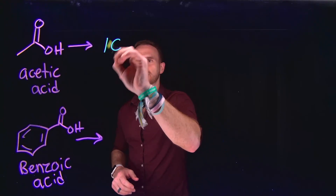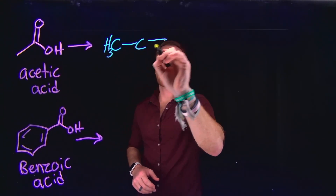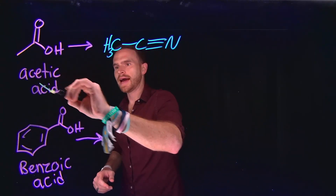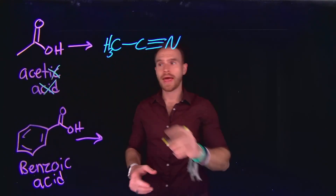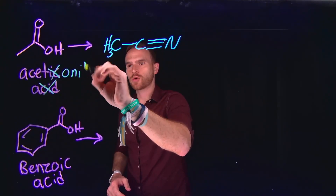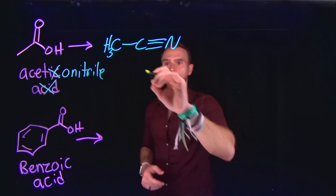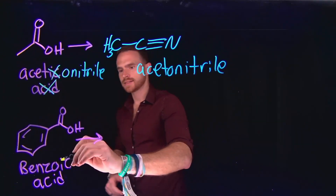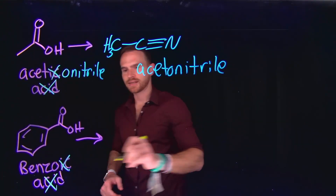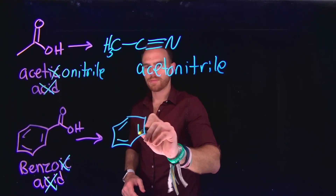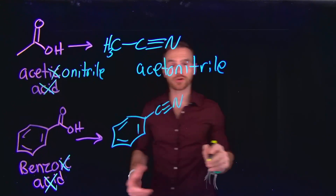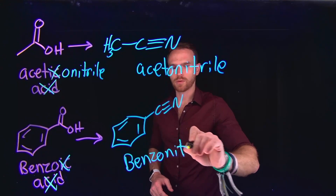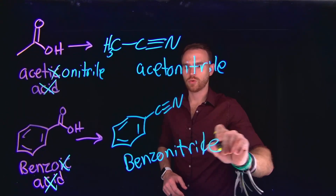Lastly for nitriles, it's also very straightforward. Remember a nitrile is that carbon with a triple bond to nitrogen. We remove the -ic acid portion and change it to -onitrile. So acetic acid becomes acetonitrile. Similarly, for benzoic acid, we remove the -ic and the acid portion, and when we turn this into a nitrile — a carbon triple-bonded to nitrogen — this becomes benzonitrile. So we're changing the -ic ending into -onitrile.